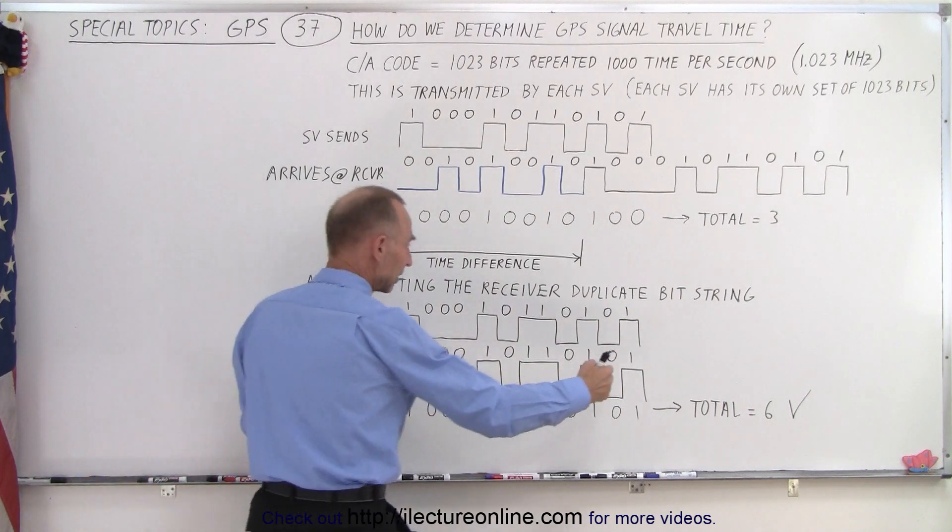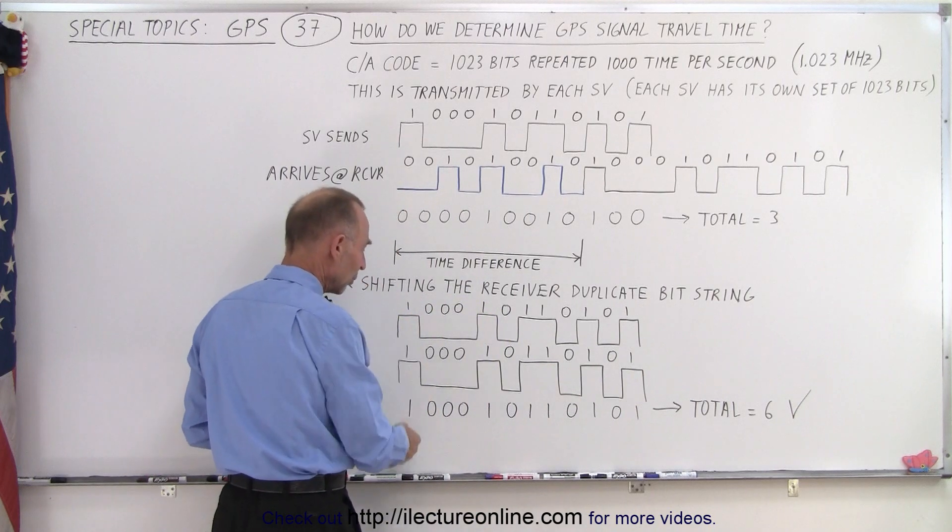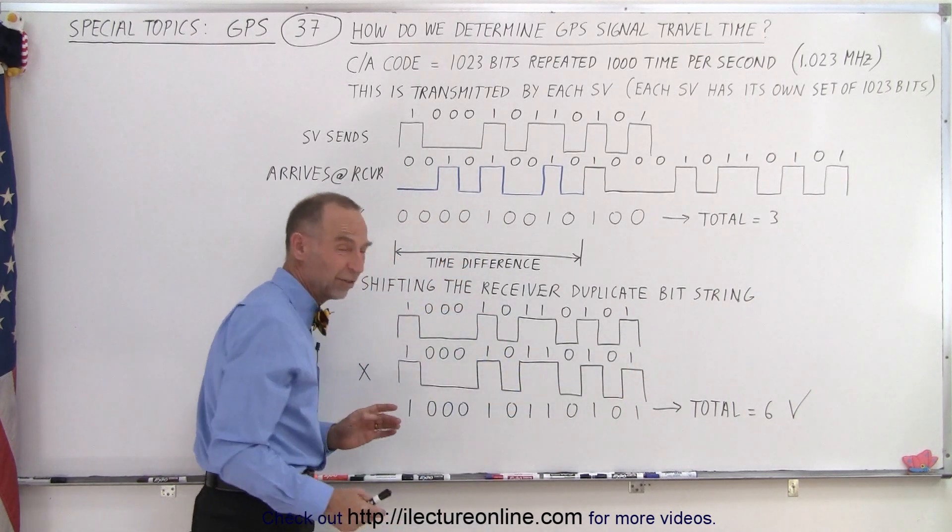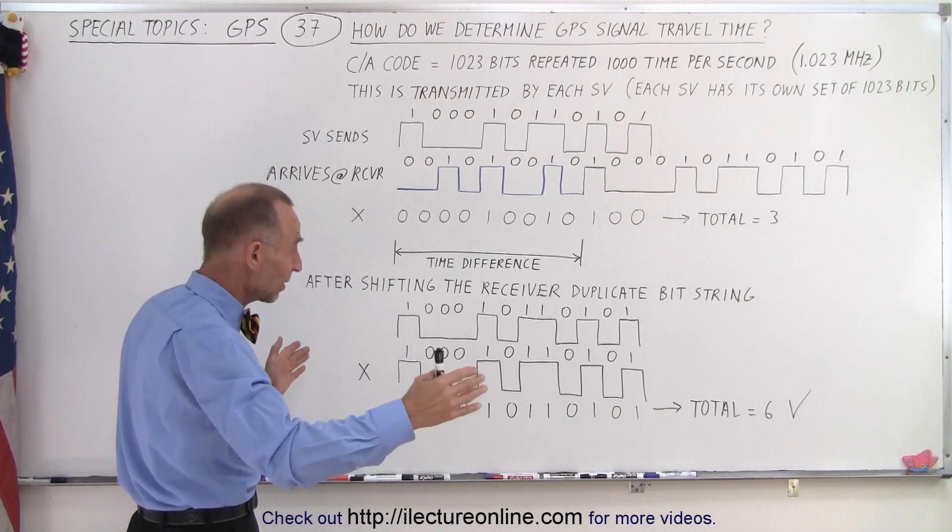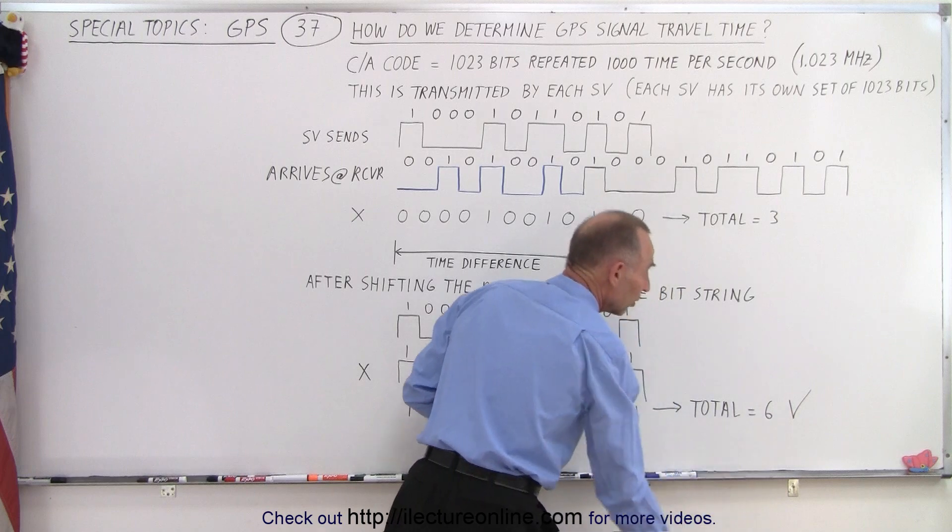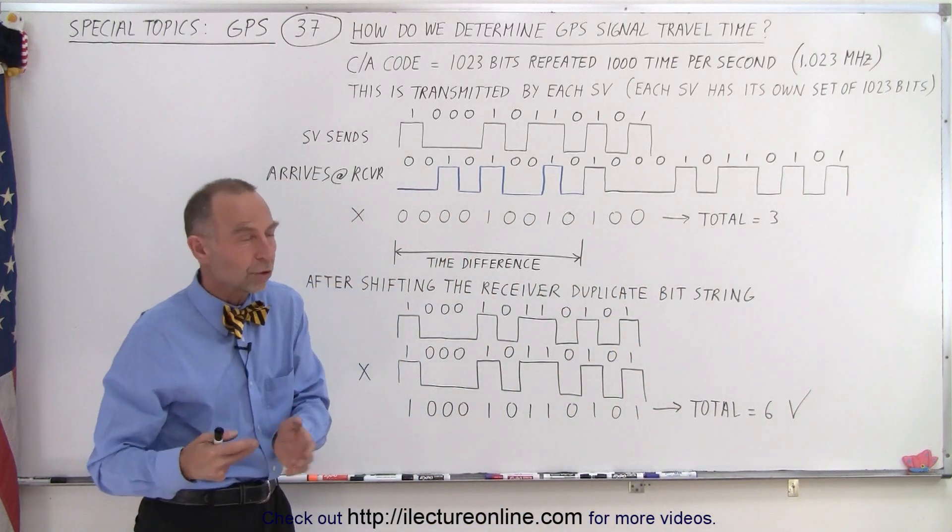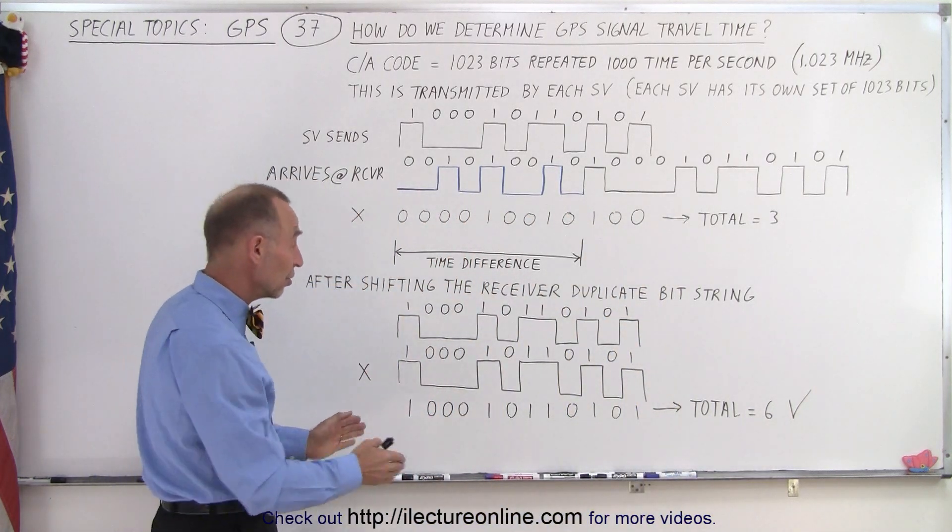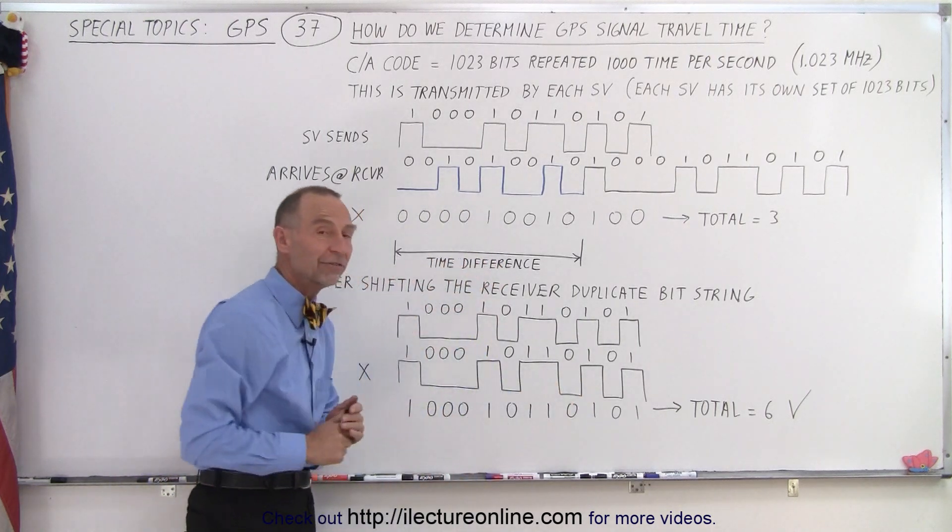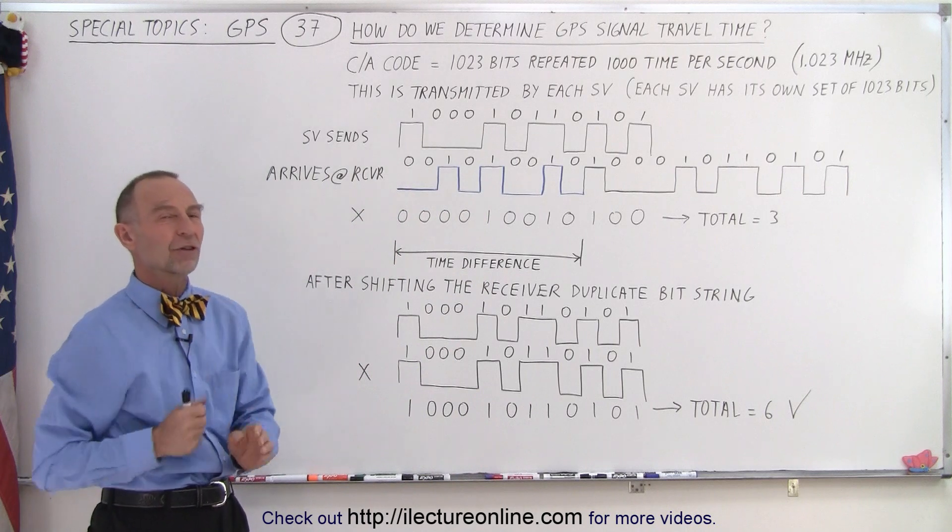And then of course when we have a perfect alignment like this, notice then we're going to have a much bigger number. In this case of this short little example, notice there's 1023 bits in the chain, but here in that small little example we end up with the number six which is the largest number you'll get with any sort of shift. Then you know I've shifted it correctly, you count the number of bits that you shifted and now you know the time differential.